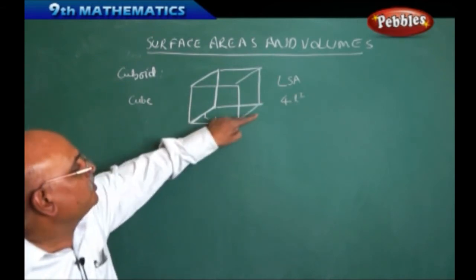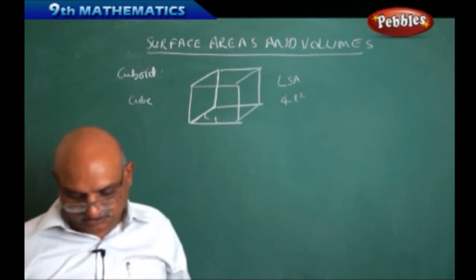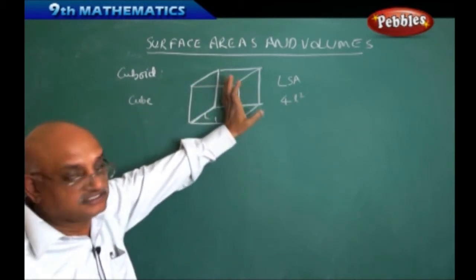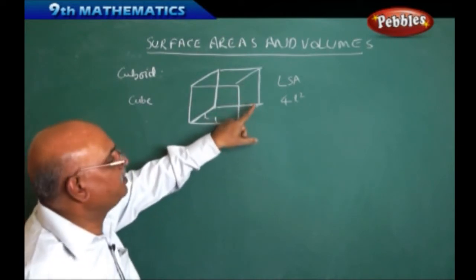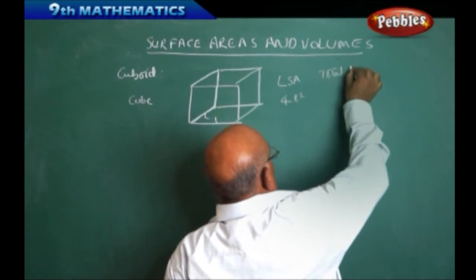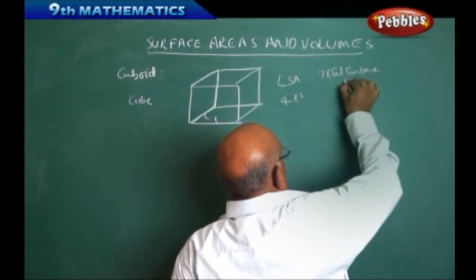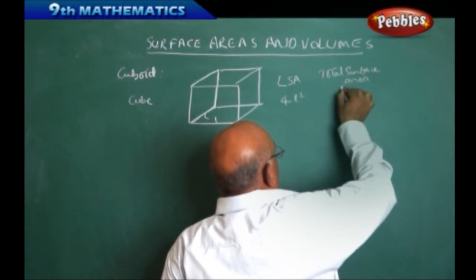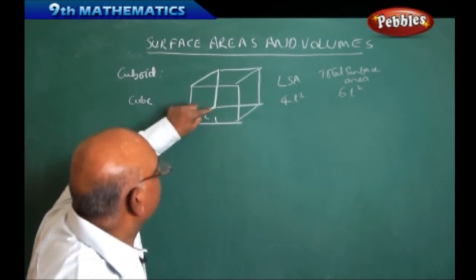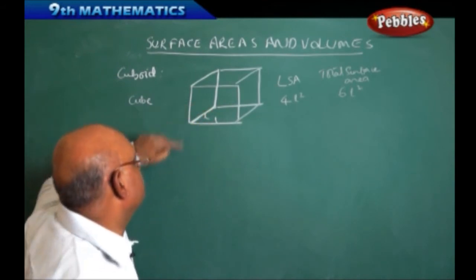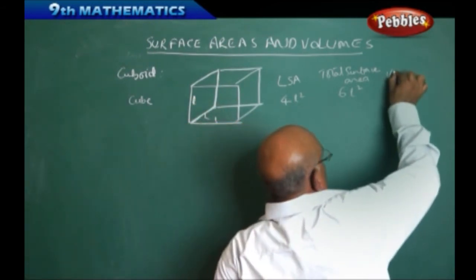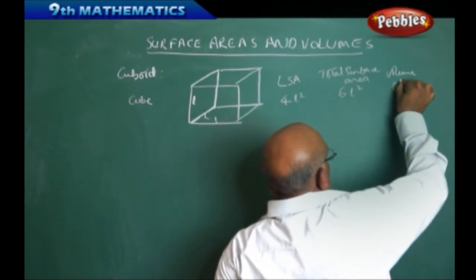Now we want to find out the total surface area. How many sides are there? For a cube, there are 6 sides of the same length. Therefore, the total surface area will be 6L². Volume requires length into breadth into height. Therefore, volume is equal to L³.